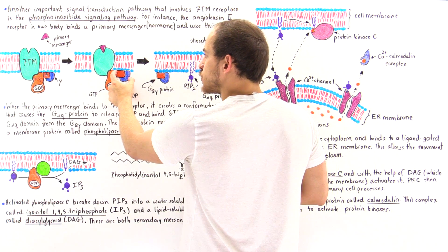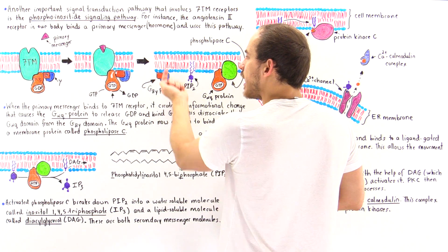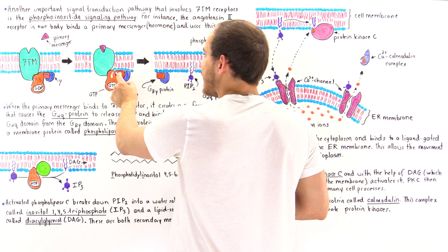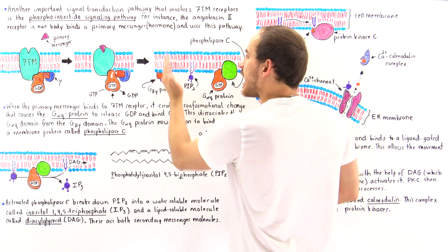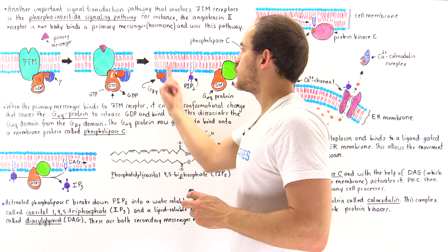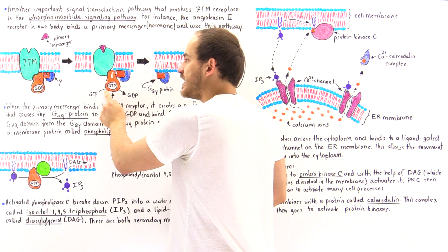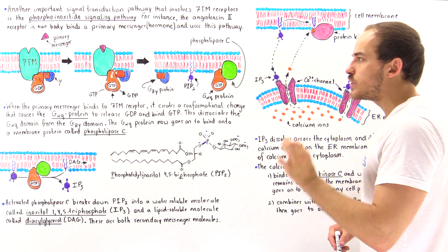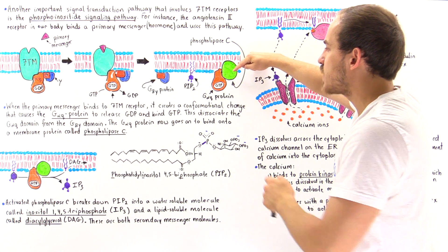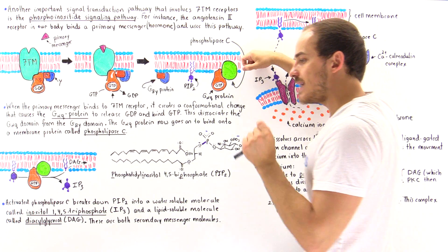The beta-gamma dimer moves away and remains bound to the phospholipid bilayer membrane, because one of these structures contains a covalently attached lipid inserted into the membrane. So the G-beta-gamma protein remains bound to this membrane. The G-alpha-q, now containing the GTP, goes on and binds onto a special membrane-bound enzyme known as phospholipase C. When the G-alpha-q protein binds onto phospholipase C, it stimulates its activity.